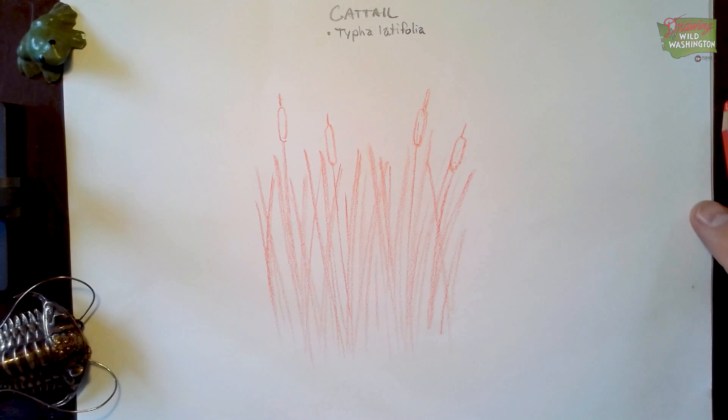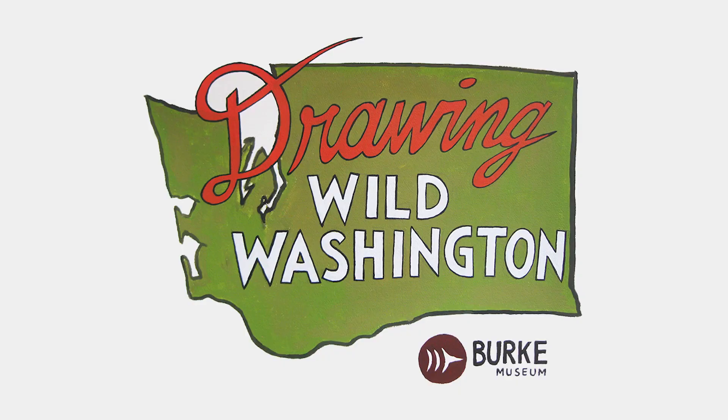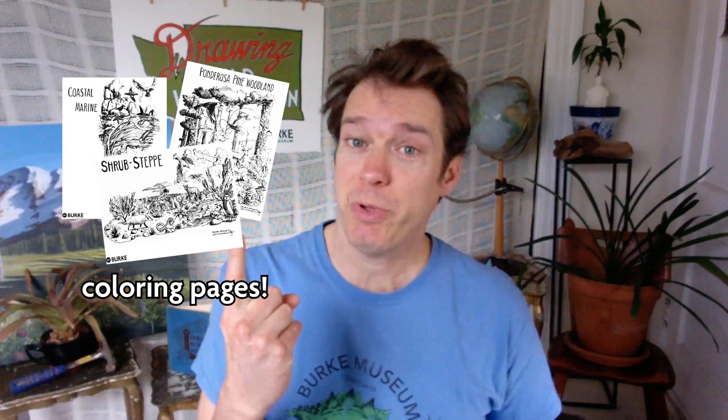That's it for now. Thanks for watching. Until next time, don't forget: drawing starts with seeing and thinking. Practice seeing the simple shapes that make up these things and thinking about how they come together, and there's really nothing you can't draw. We've got coloring book pages available for each one of the ecosystems we've done a program on, and the entire mural is available as a silkscreen poster for purchase on the website. Check out the links and get yourself some more ecosystem art. Bye!